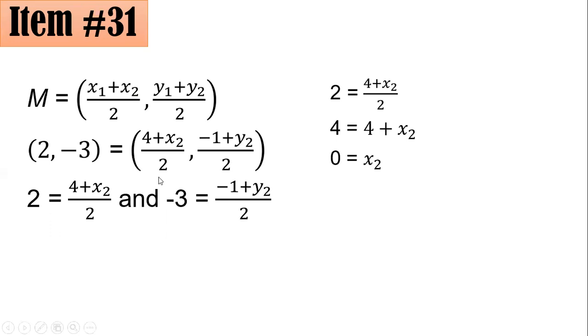For the second equation, multiplying both sides by 2, we have -6 = -1 + y₂. We need to add both sides by 1. Hence, -6 + 1 gives you -5 as y₂.